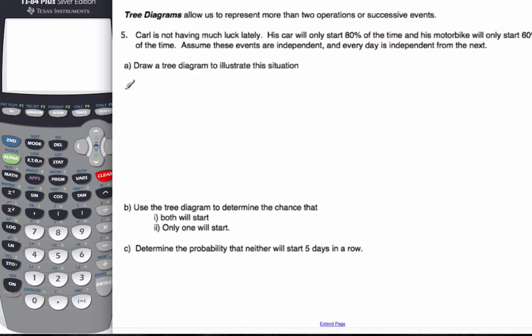So tree diagrams are really handy to help with successive events. I recommend you pause this video here and try this whole problem by yourself and then check to see how you're doing. For me, I'll just go right for it. So I know Carl's having a bad day and his car will only start 80% of the time. So the car either starts or it does not start. So it starts 80% and it does not start 20%.